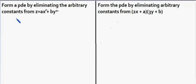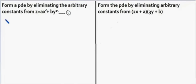We have been given two problems here to form the partial differential equation by eliminating the arbitrary constants from z = a·x^n + b·y^n. In this first problem, let us take the given equation as equation number 1.